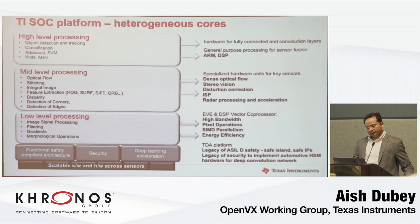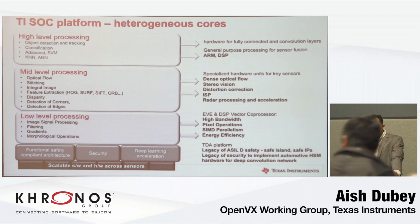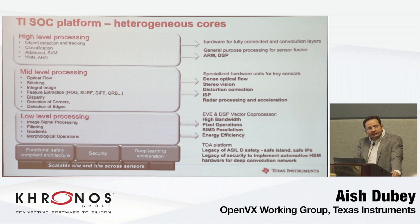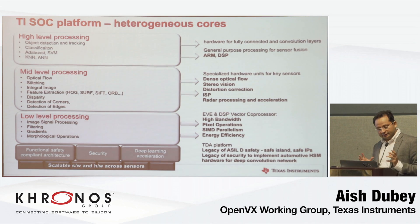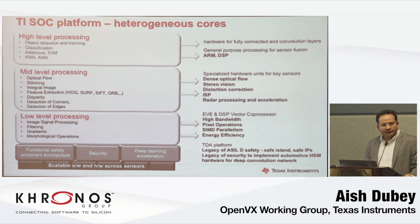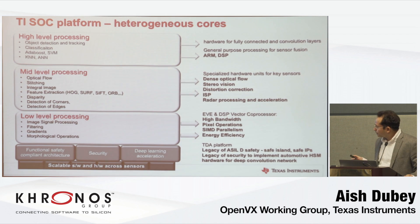Before going into our implementation, it's worth talking about what the platform looks like. It's a heterogeneous platform with purpose-built cores to solve different classes of image processing and ADAS automotive problems. The first key component is a core that does processing on low-level pixel data using a single instruction, multiple data architecture. We call it EVE — Embedded Vision Engine.